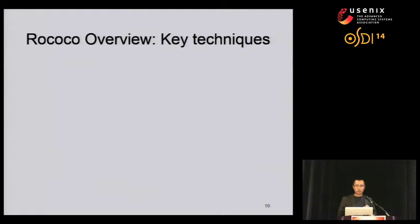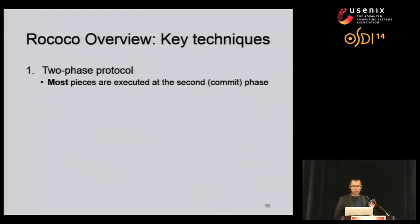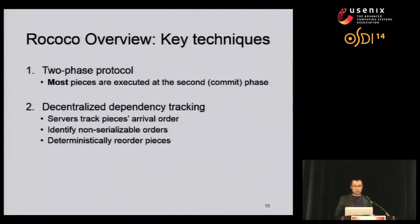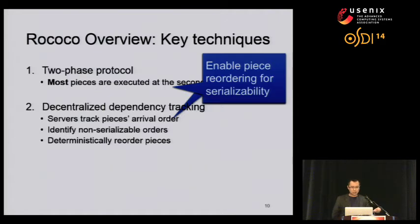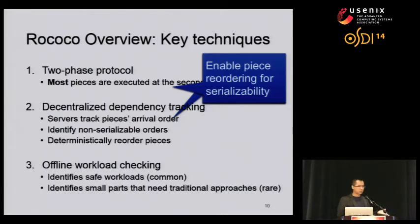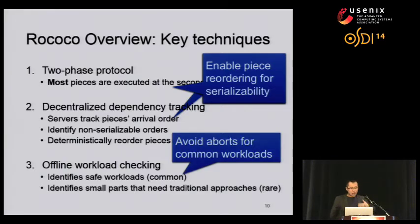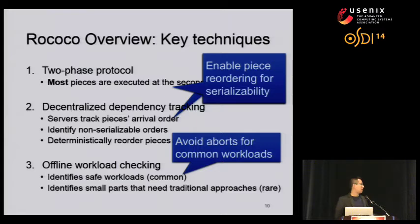To leverage our insights, we introduced three key techniques into Rococo. First, Rococo uses a two-phase protocol — unlike two-phase locking or OCC, we do not execute pieces in the first phase but defer the execution to the second phase. Second, we use decentralized dependencies to track the arrival orders of conflicting pieces, identify if that order is non-serializable, and if so, deterministically reorder them. These two techniques enable servers to deterministically reorder piece execution into a serializable order. However, not all pieces of transactions can be deferred, and these pieces restrict our reordering possibilities. To identify if reordering is always possible, we introduce an offline checking, and we find that almost all common workloads are entirely reorderable, in which case Rococo does not generate any system aborts. In the next few slides, I will talk through these three key techniques one by one.